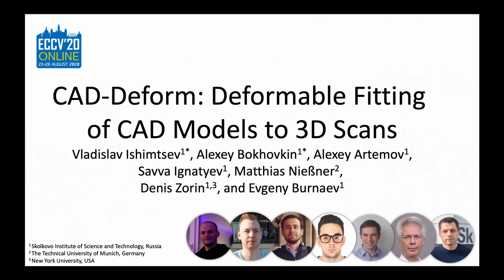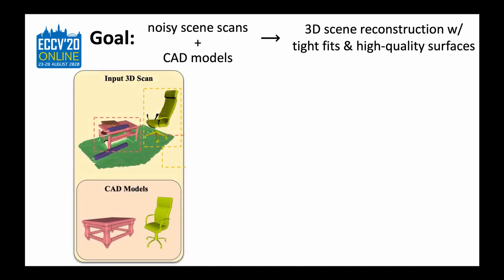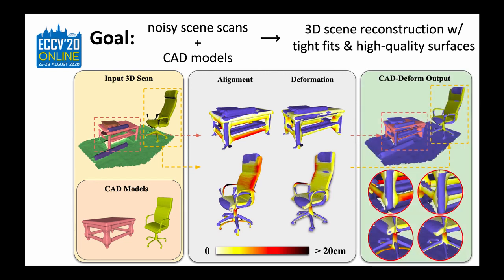We present CAD Deform, a method to improve the quality of 3D scene reconstruction with a set of 3D CAD models. Our goal is to go from a noisy 3D scan and a collection of CAD models to a high-quality scene reconstruction. We start with a voxelized scene scan and a set of meshes, retrieve and align CAD models to scan fragments, but unlike existing methods also non-rigidly deform the retrieved 3D models to obtain more accurate CAD-to-scan fits.